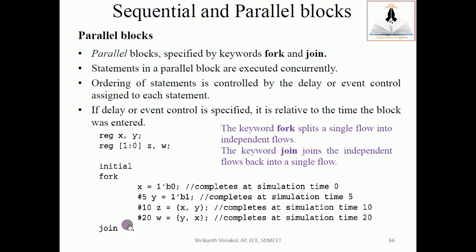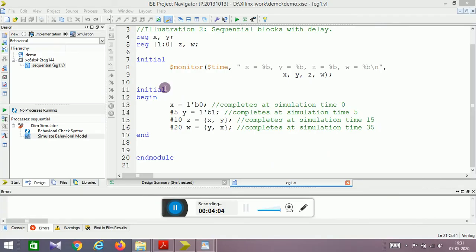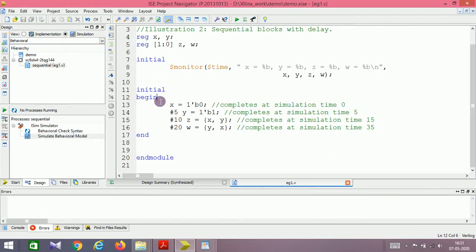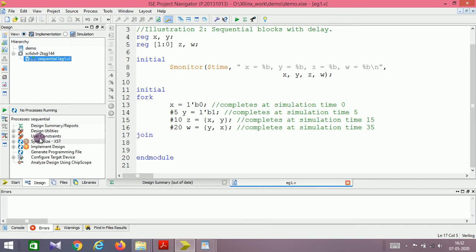I'll have the same example, only I change begin and end with fork and join. Let me just change this code to the parallel block: fork join. Now how it should behave, let us analyze. Let it synthesize.